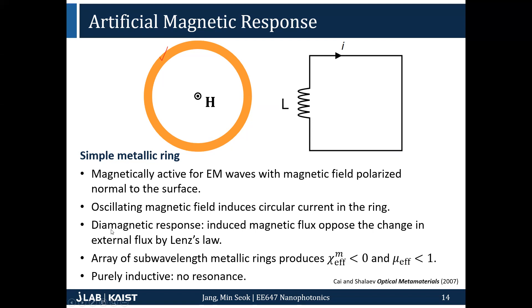So the response of the ring must be diamagnetic — the induced magnetic flux opposes the change in external flux by Lenz's law. Because the ring is inductive, it always suppresses the change in magnetic flux, making it diamagnetic. So if you have a ring, the effective permeability must be smaller than one. Also, since this is purely inductive, there's no resonance we can induce with this technique alone. But we want more dynamic response — sometimes we want to induce resonance to maximize the magnetic response, and sometimes we want paramagnetic response rather than always diamagnetic.